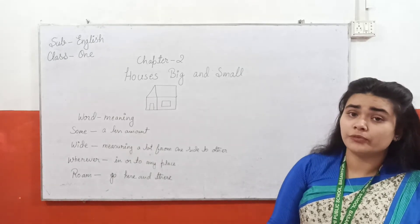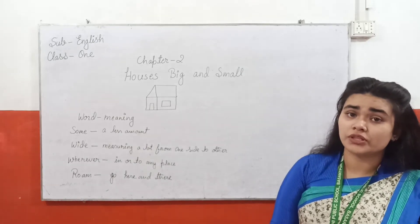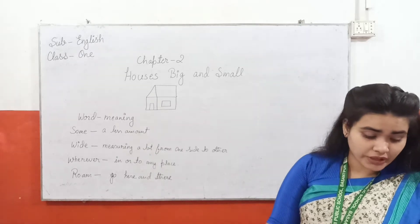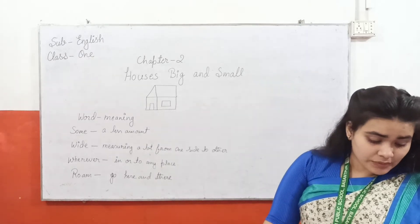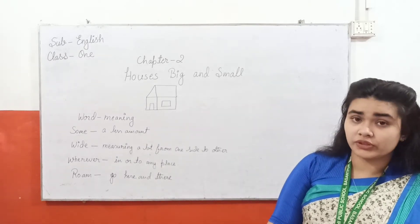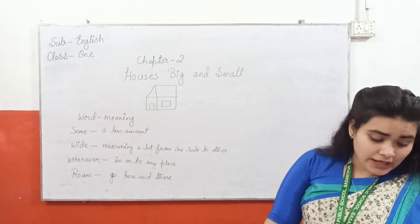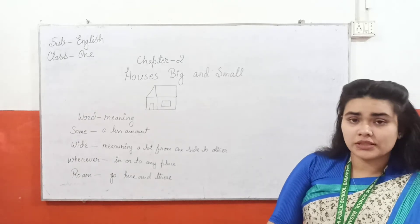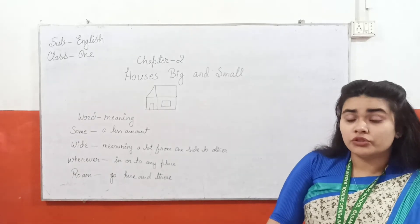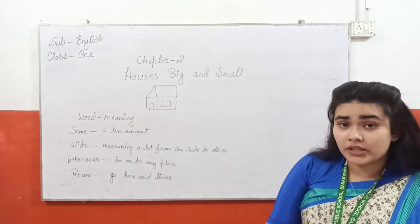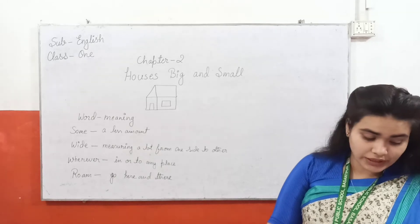Kuch houses jo hota hai chote hote hain. Some houses are big — kuch house jo hota hai bada hota hai. And some houses are small — kuch houses jo hota hai, that is very small.